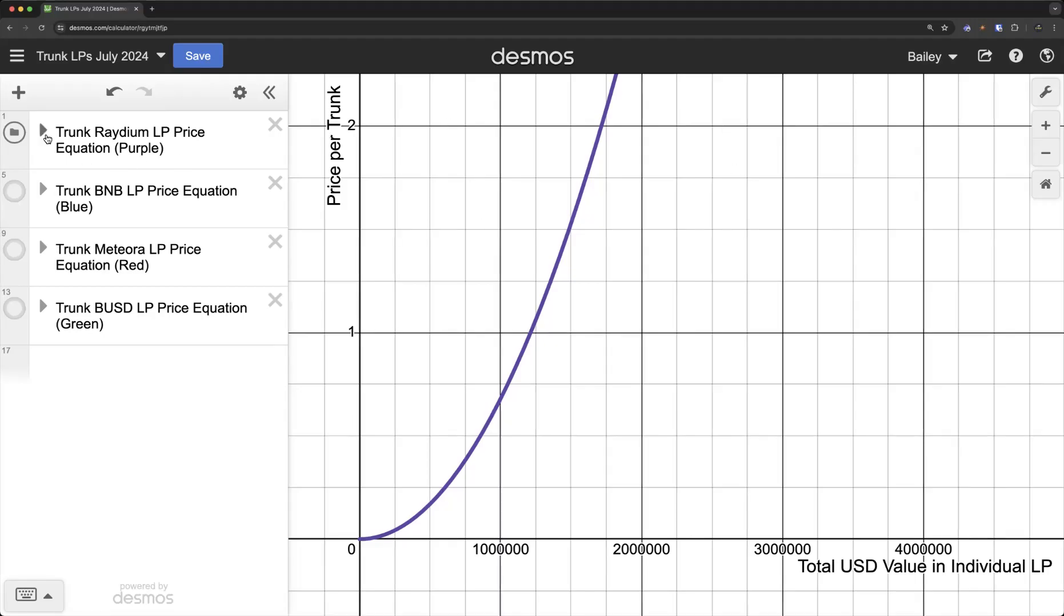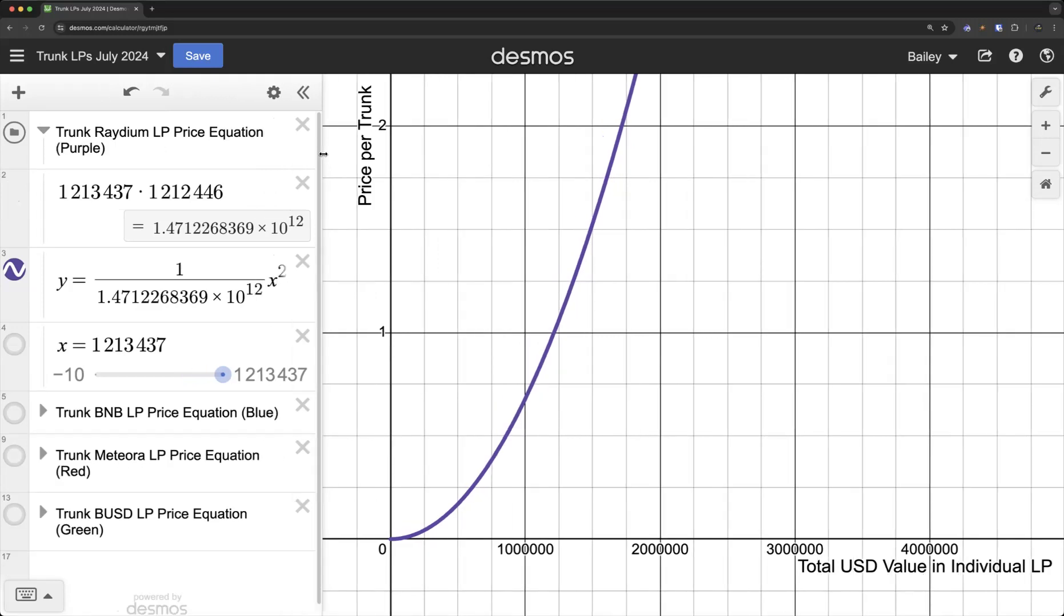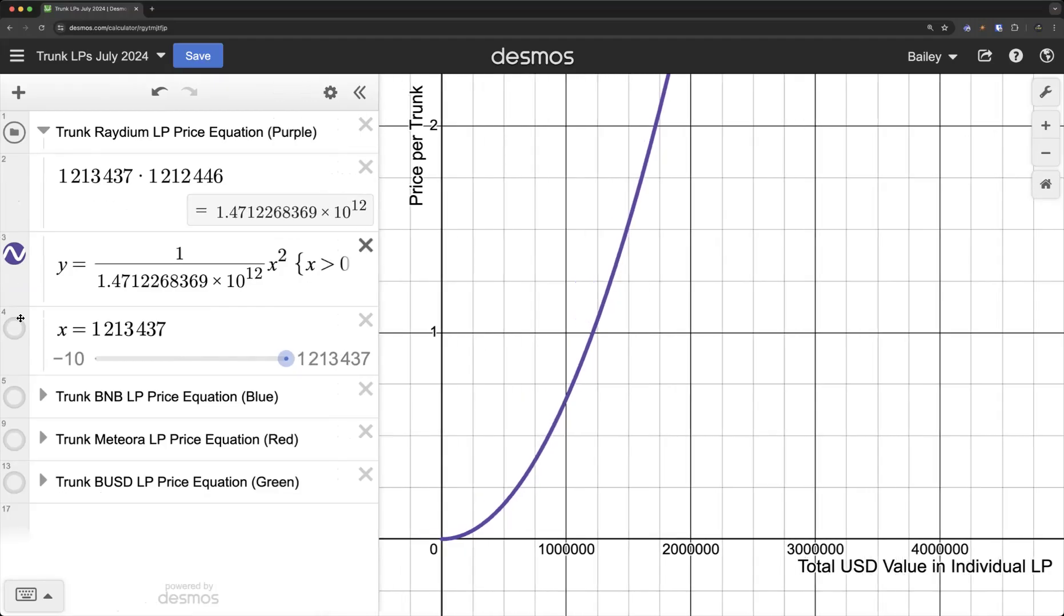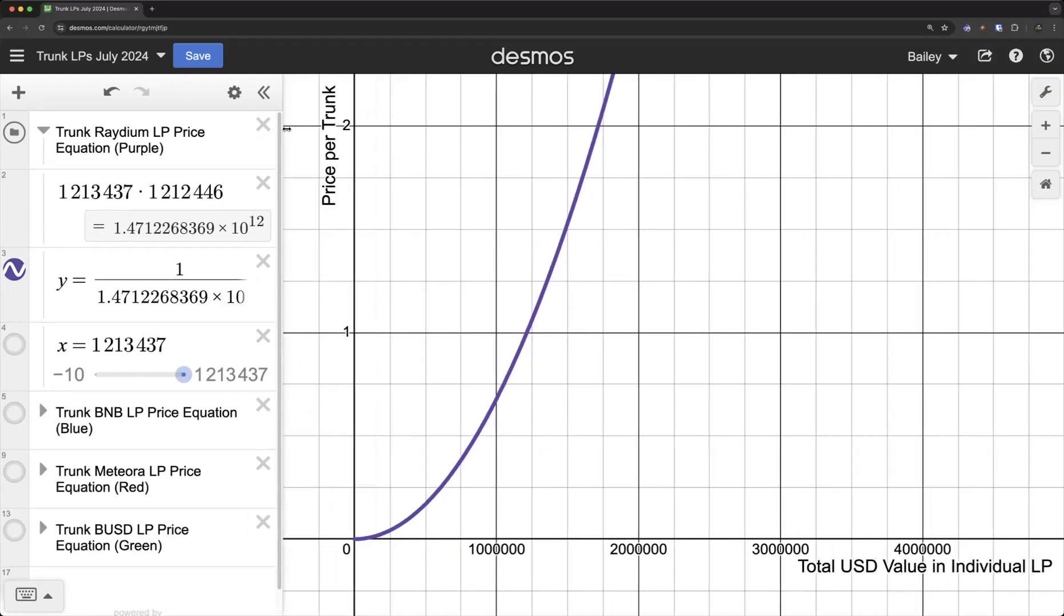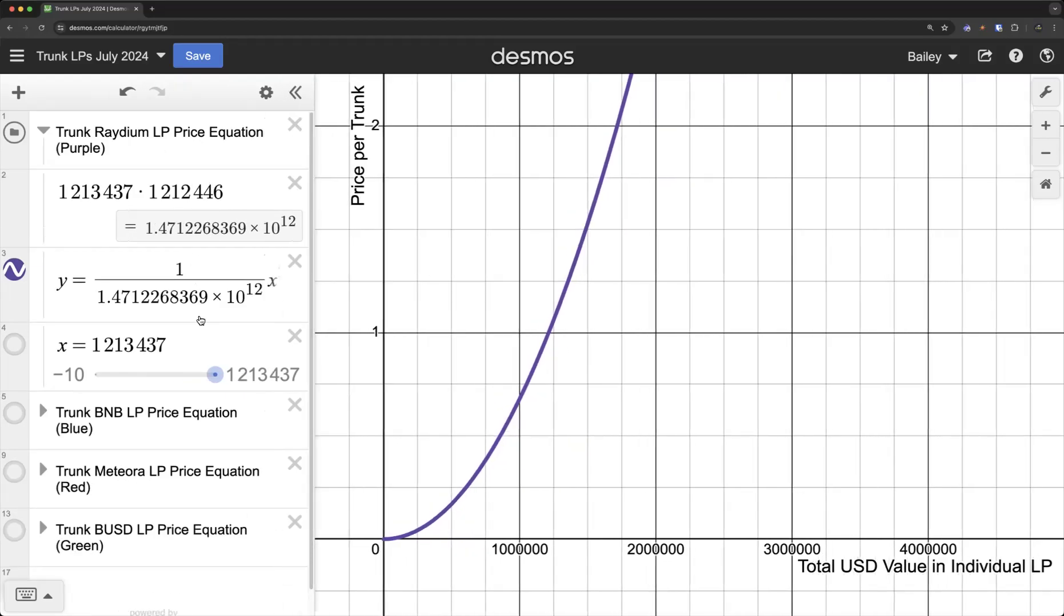What I did was I just used that constant product formula. So you just take the amount of tokens, the USDC times the trunk, and we get our K in the constant product formula. And then these price equations are going to look like this: the price is going to be 1 over K times X squared. You can use that to track the price and how the price is going to change over time.